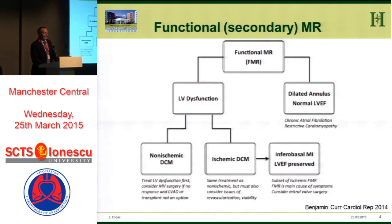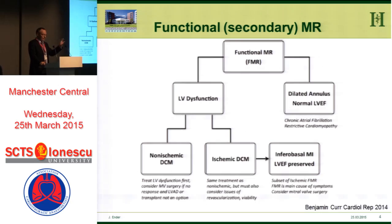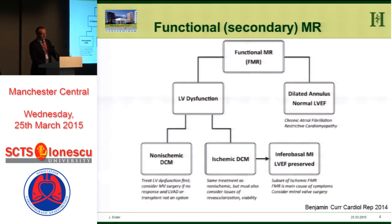There are different causes for functional or secondary MR. One is LV dysfunction — either due to non-ischemic dilated cardiomyopathy or ischemic dilated cardiomyopathy — and both have the same influence on the mitral leaflets. The other cause, covered by the first speaker, is a dilated annulus with normal ejection fraction, which is type 1.